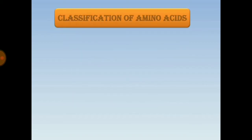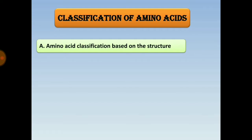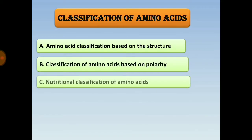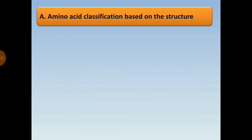The classification of amino acids is important for competitive exams such as NIPER, Drug Inspector, and especially the GPAT exam. There are four main classifications: based on structure, based on polarity, nutritional classification, and classification based on metabolic fate.